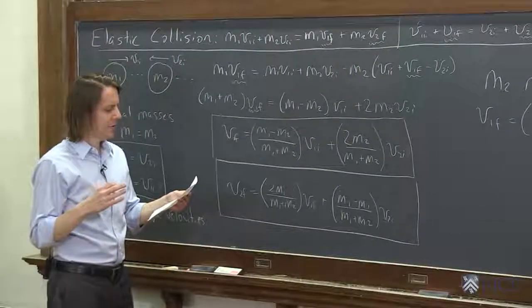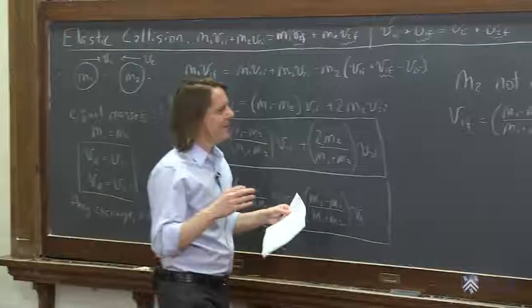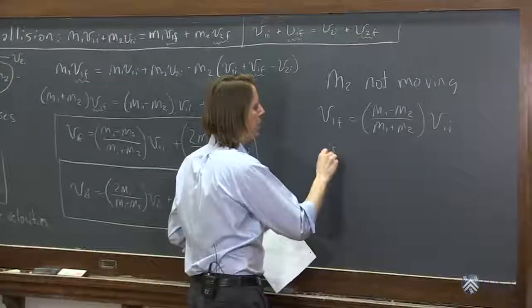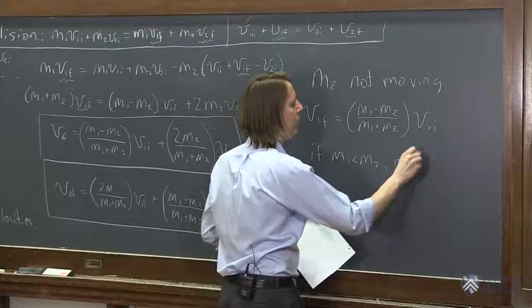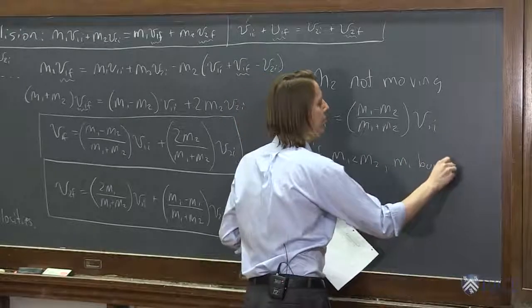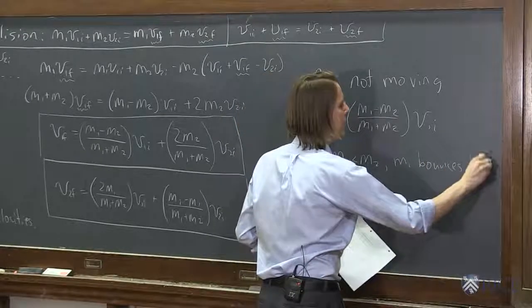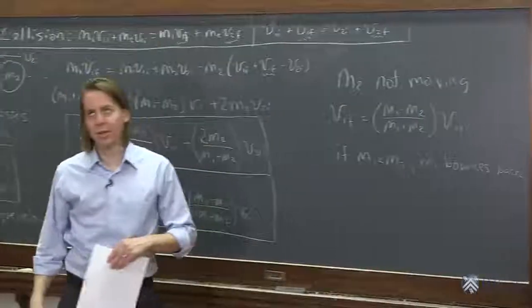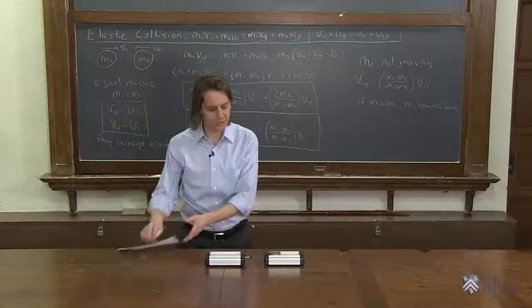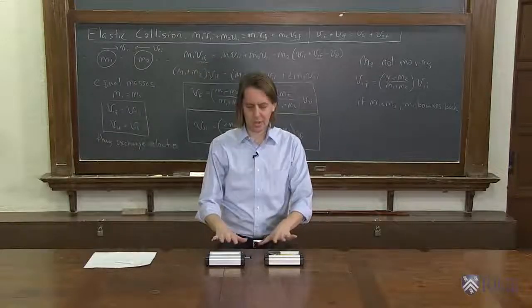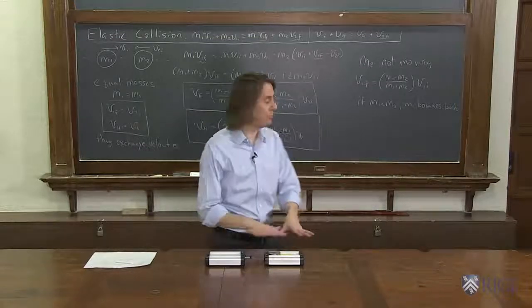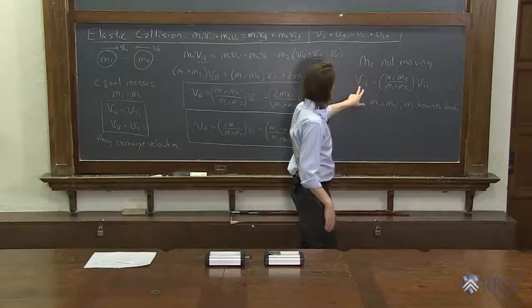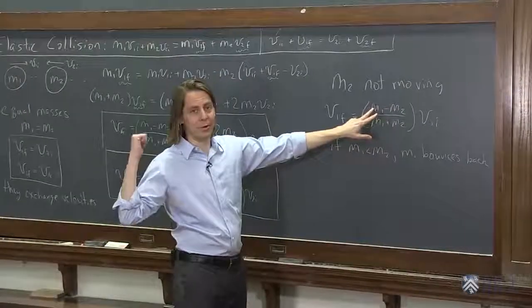So what this tells you is if m1 is less than m2, m1 bounces back. It'll bounce off of something if it hits something bigger than it is. So we can show you that. We can take m1, m2. Here they're the same mass. So that would be a case where it would not move at all. v1 final would be 0. We did that over there. But now let's make m2 heavier than m1.